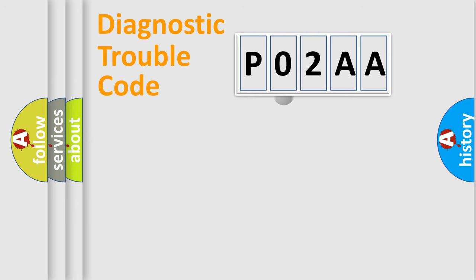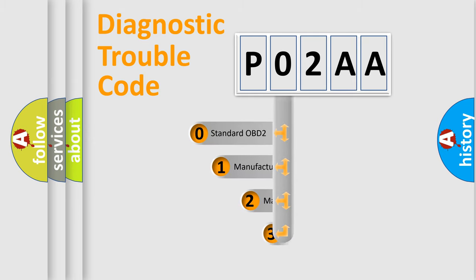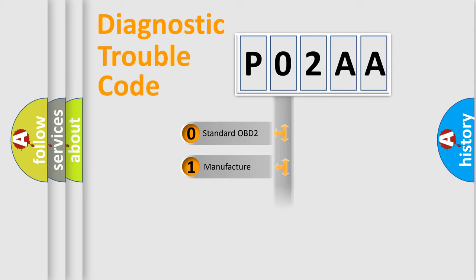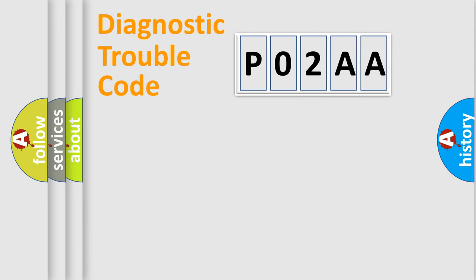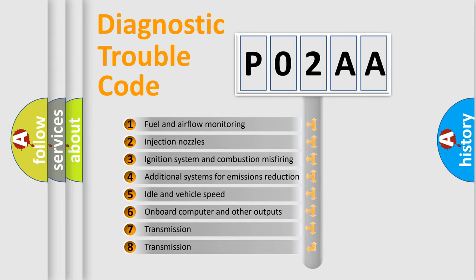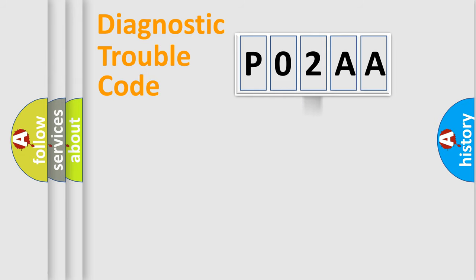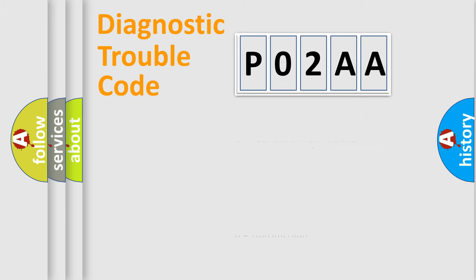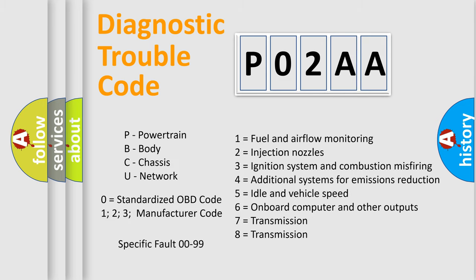This distribution is defined in the first character of the code. If the second character is expressed as zero, it is a standardized error. In the case of numbers 1, 2, or 3, it is a manufacturer-specific error. The third character specifies a subset of errors. This distribution is valid only for the standardized DTC code. Only the last two characters define the specific fault of the group, and this division is valid only if the second character is zero.